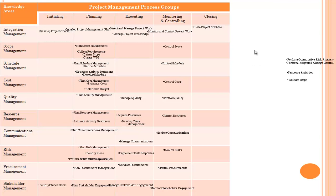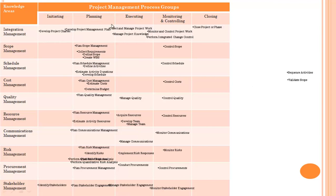Perform qualitative risk analysis will come under risk knowledge area. Perform quantitative risk analysis — both come under planning process group. Perform integrated change control will come under monitoring and controlling. Sequence activities will come under schedule management knowledge area and planning process group.